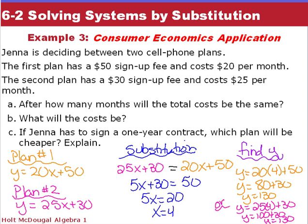So the two equations we get for plan A, or plan 1, we get y equals 20x plus 50, because it's $50 sign-up, $20 a month. Plan 2 is $30 sign-up and then $25 a month. So since they're already both solved for y, we can substitute, set them equal to each other. So 25x plus 30 equals 20x plus 50. Getting x onto one side, subtract 20x from both sides, we get 5x plus 30 equals 50, subtract 30, 5x equals 20, or x equals 4, which tells us at four months, they're going to have the same costs.